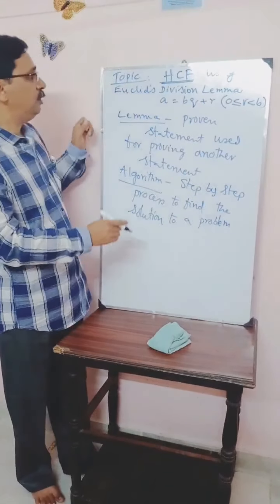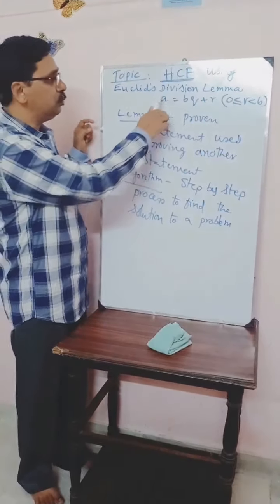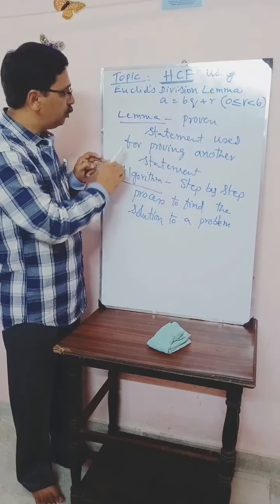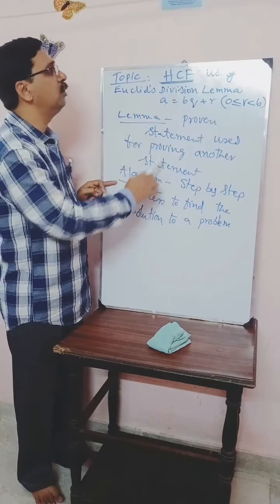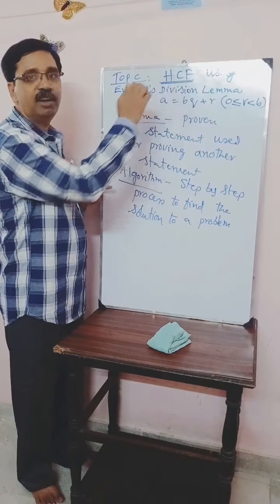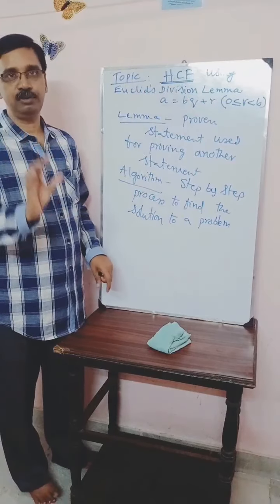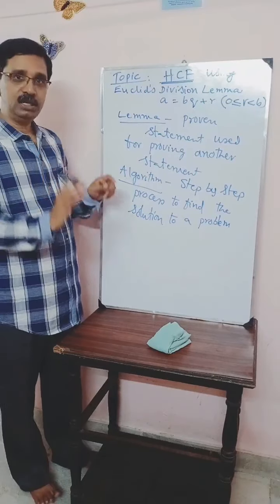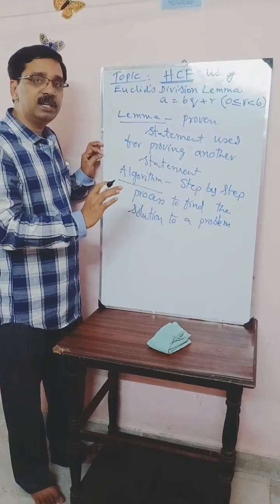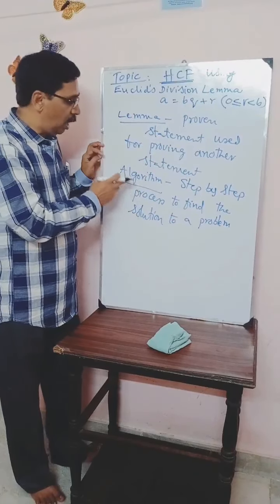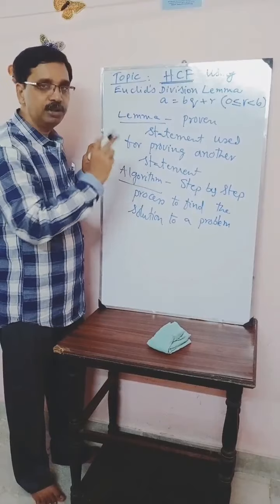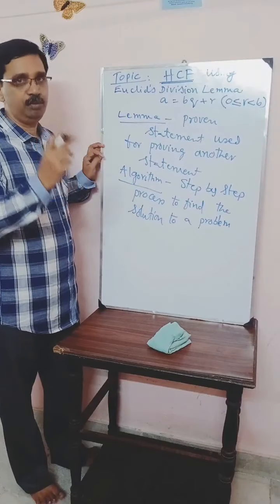Now we use Euclid's division lemma, or rather Euclid's division algorithm, to find the highest common factor of given numbers. So now we understand this particular algorithm — Euclid's division algorithm — by taking an example.